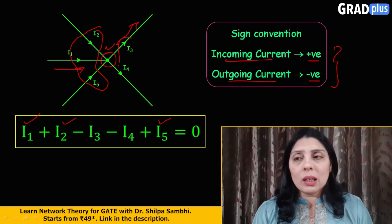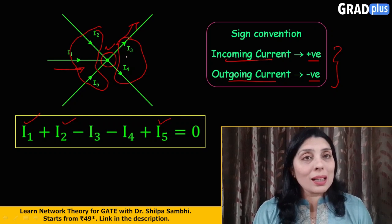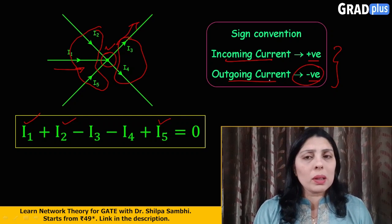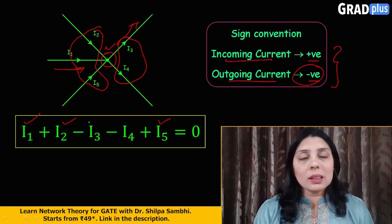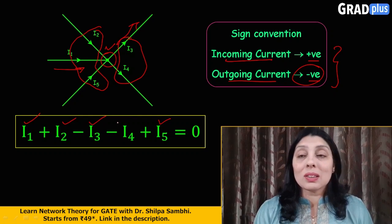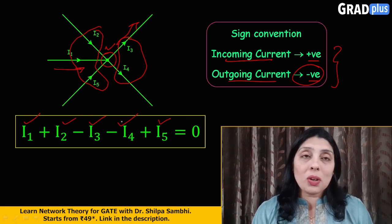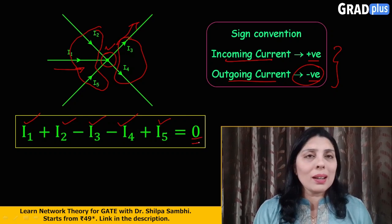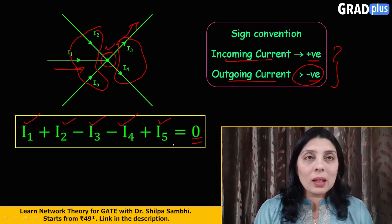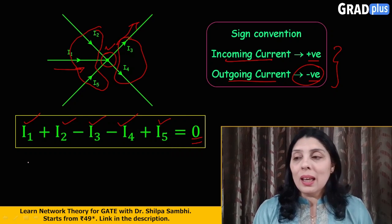I3 and I4, these two are the outgoing currents and they have to be taken with the negative sign. So it's written as minus I3, it's written as minus I4. Now the algebraic summation of all the currents in this node has to be zero and so the final equation is equated to zero. In other words you can say that...